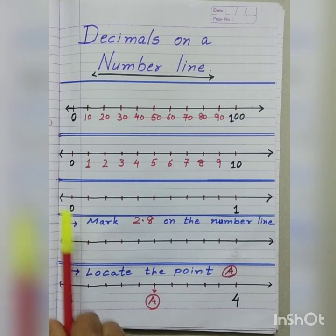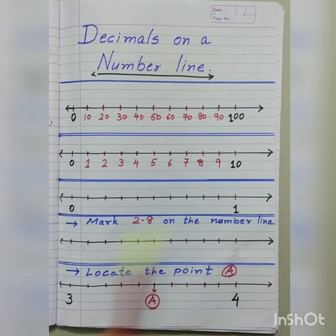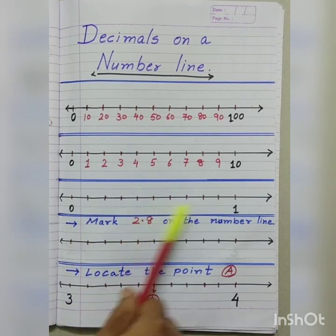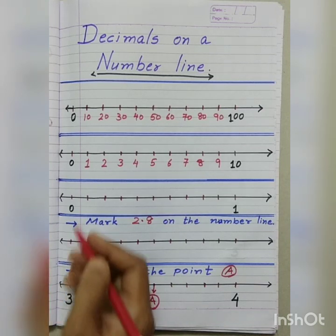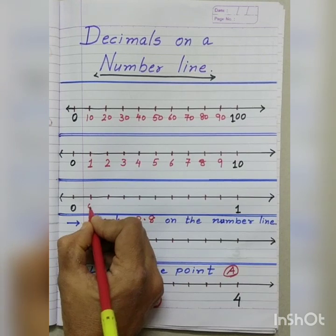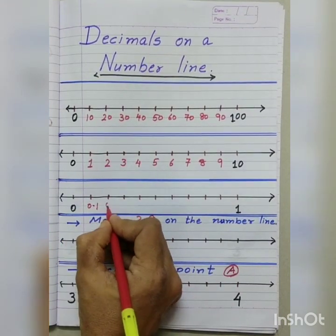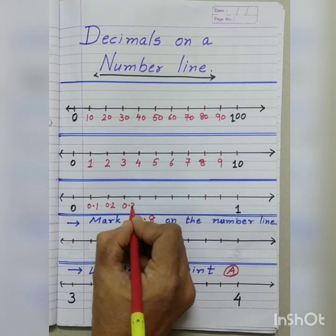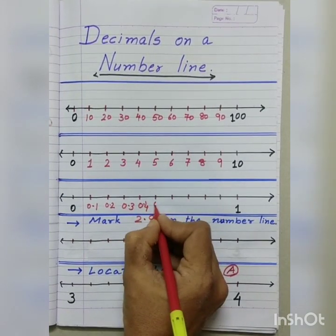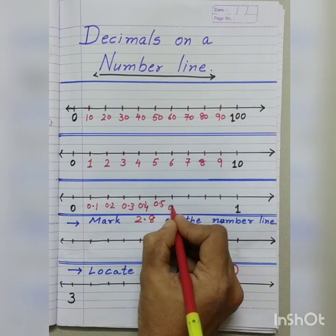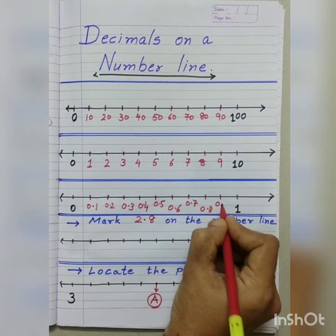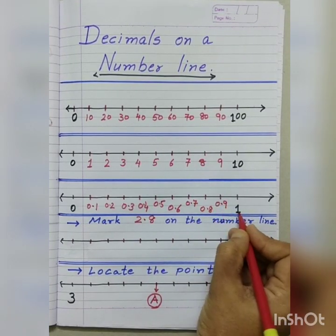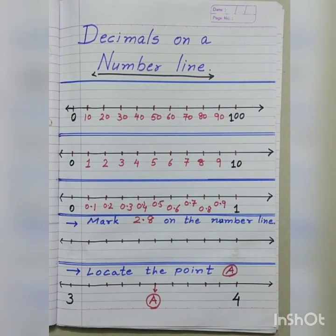Now, if we go from 0 to 1 and we divide it into 10 equal parts, do you remember what each one of those parts is called? It's a tenth. So, we write 0.1, 0.2, 0.3, 0.4, 0.5, 0.6, 0.7, 0.8, 0.9, 1.